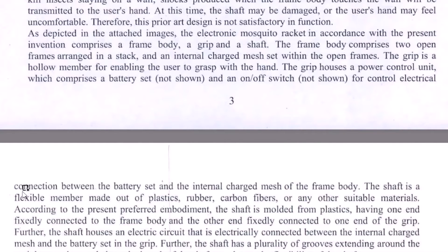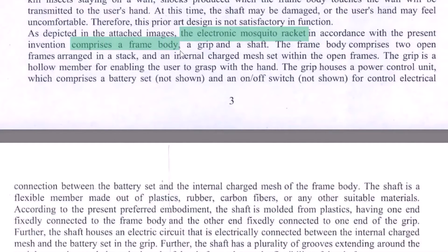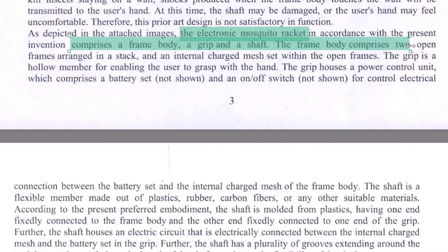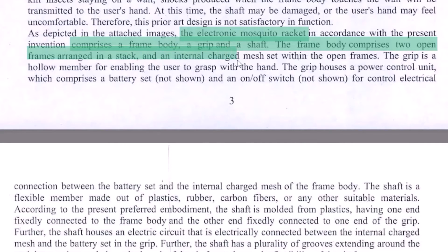This provides us with the claim material. So we have: 'Electronic Mosquito Racket' — comprises a frame body, a grip, and a shaft. We can further define the frame by saying the frame body comprises two open frames arranged in a stack and an internal charged mesh set within the open frames.